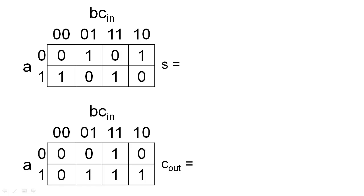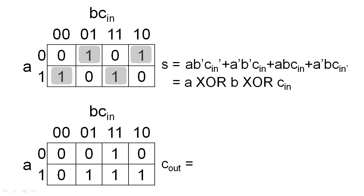The K-map for the sum output shows us that we cannot create a convenient minimal expression for the sum output. However, because the sum is one whenever an odd number of input bits is one, we can simply represent the function as two sets of XOR operations. The carry out bit simplifies a little nicer, and is one whenever two or three input bits are one.